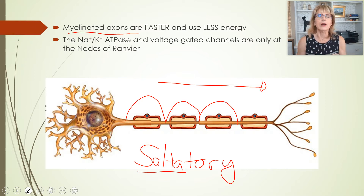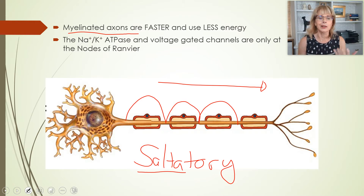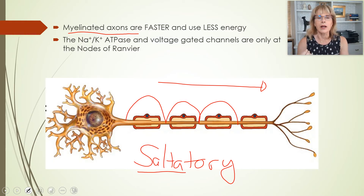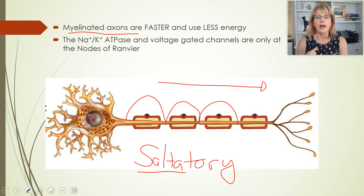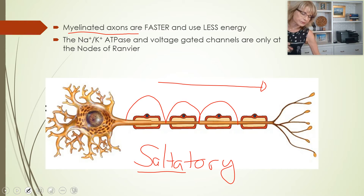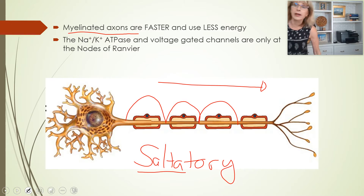The problem of action potential conduction may not be obvious, so let me describe it in a little more detail. You have axons that go from one part of your brain to another part of your brain, and from your brain down your spinal cord. And then you have axons that go all the way from the middle of your back all the way down the back of your leg.